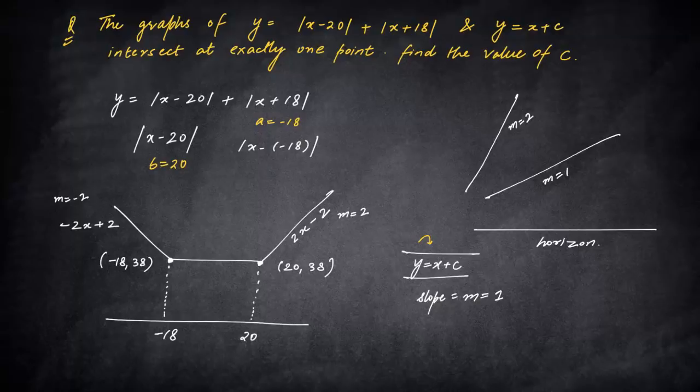So if you notice, there is only one case which will make this work, when the line just goes like this, where it is going to just rip off, something like this. Just imagine a line like this, it will just touch 20 comma 38. And in this way, since it is below the entire curve, it will never intersect at more than one point.